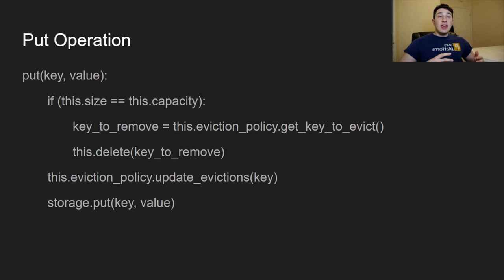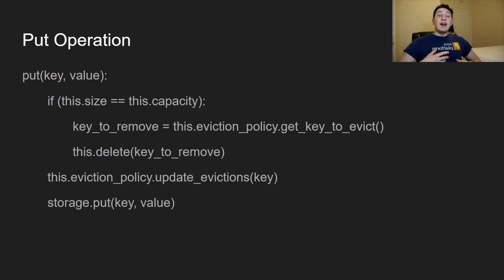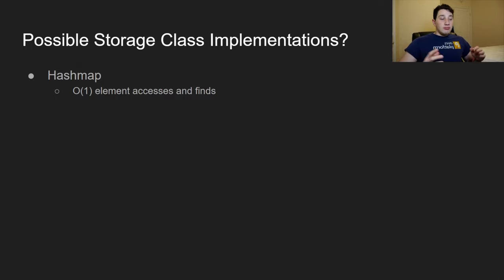For put: we're putting in a key with a value. First, if the size equals the total capacity, we use our eviction policy to find the next key to remove by calling 'get key to evict'. We then call delete on that key, which also decrements the size. We update evictions since we're adding a new key, and put the key-value pair into storage. Also, make sure to increment the size by one.